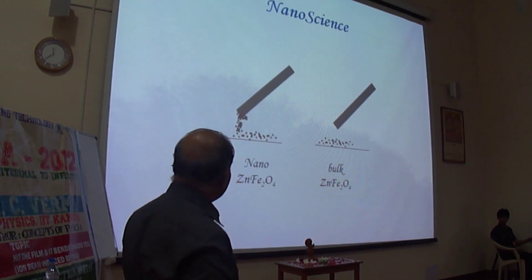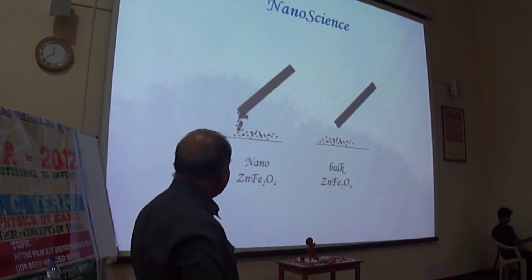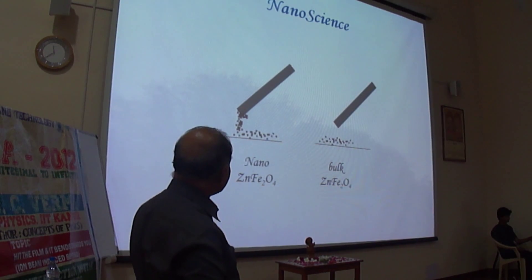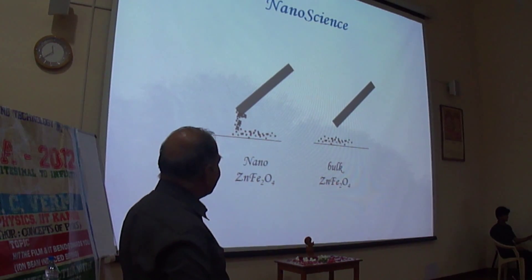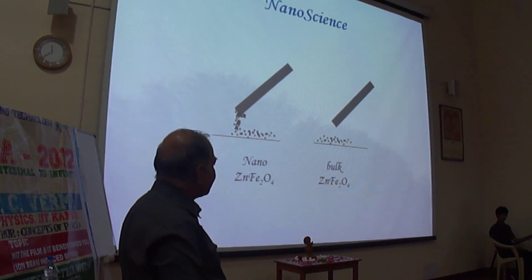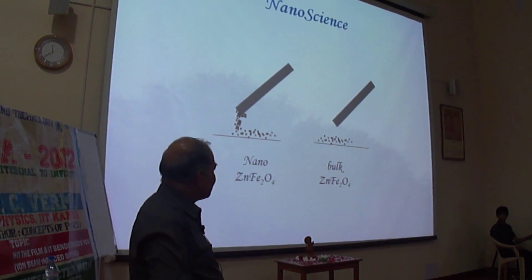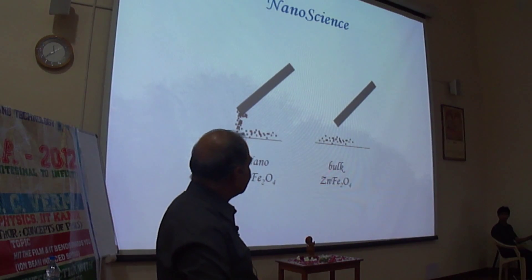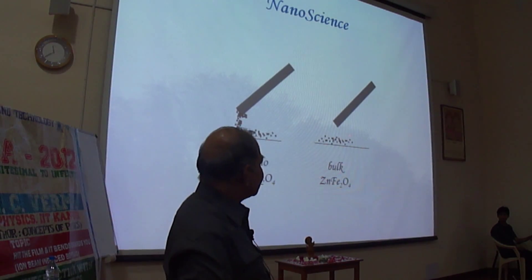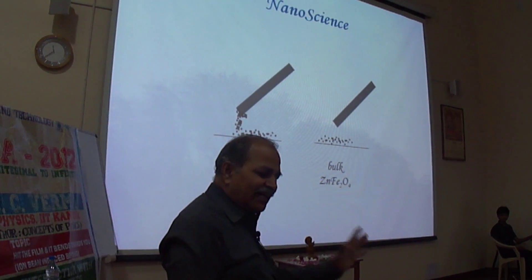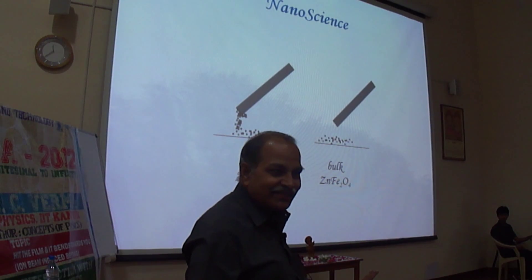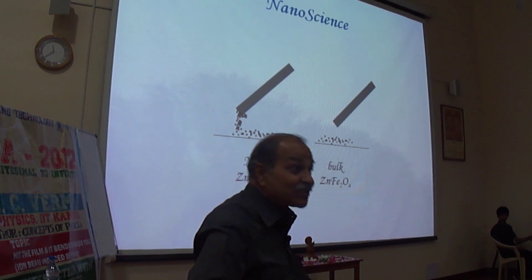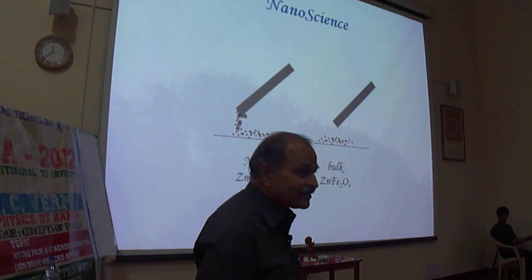With 4 nanometer zinc ferrite, it was attracted by a magnet very well, whereas bulk zinc ferrite is a paramagnetic material and is not attracted. So at that level, a lot has to be discovered.